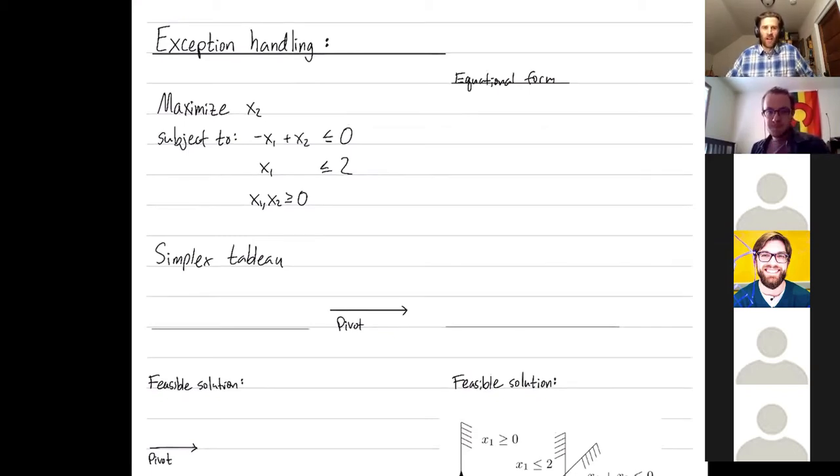Welcome everybody! So I want to talk about another exception that can handle the simplex method, which is called degeneracy. I'll talk more about why it's called that as we go.